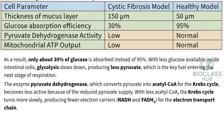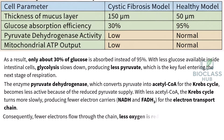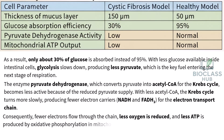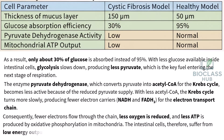Consequently, fewer electrons flow through the chain, less oxygen is reduced, and less ATP is produced by oxidative phosphorylation in the mitochondria. The intestinal cells therefore suffer from low energy output and reduced metabolic activity.